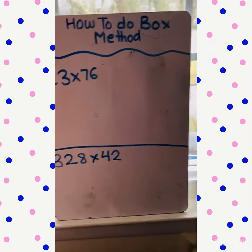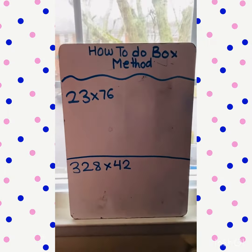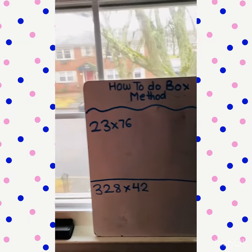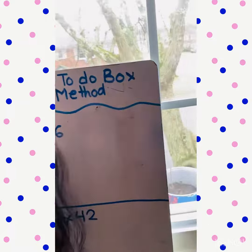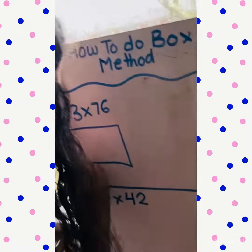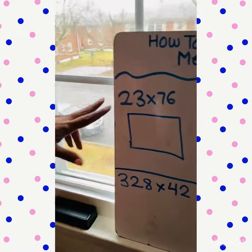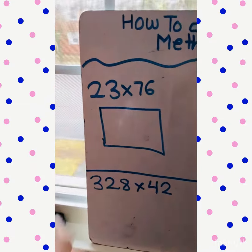To do the box method, we can do it with two digits, three digits, or four digits. So first we have to draw a box. Then we count the digits: one, two, three, and four. So we draw four boxes.